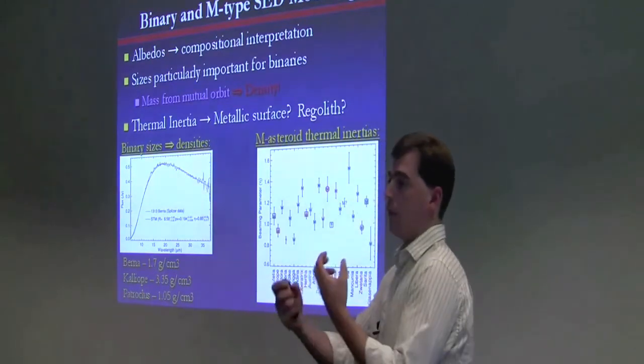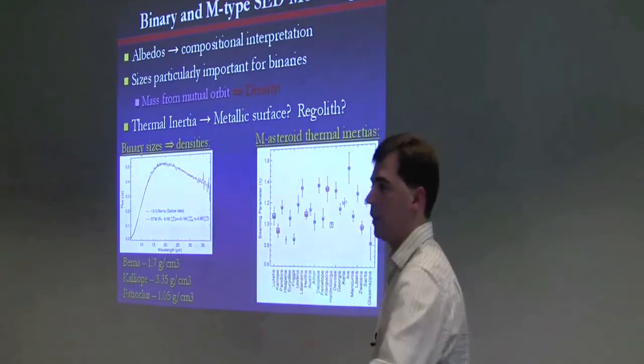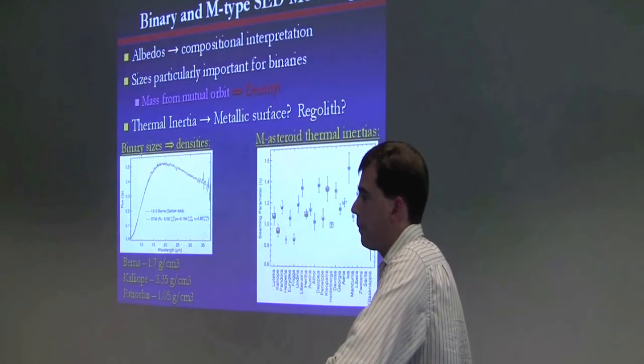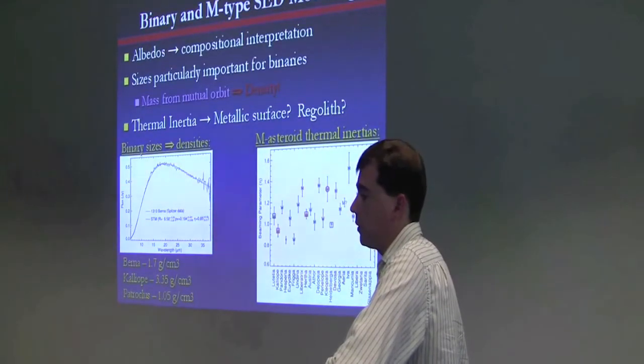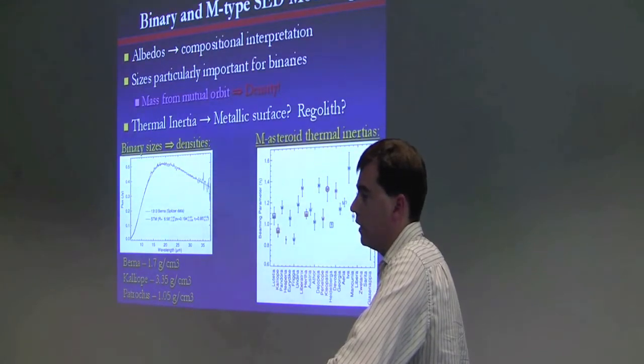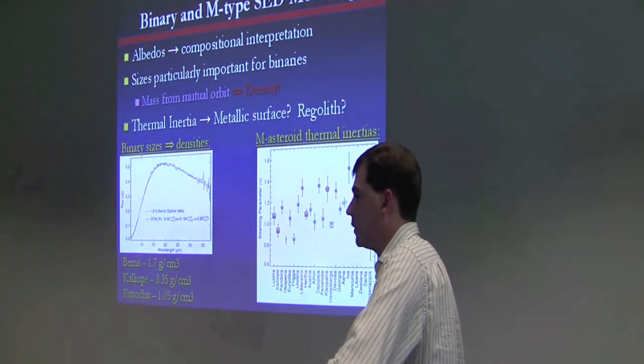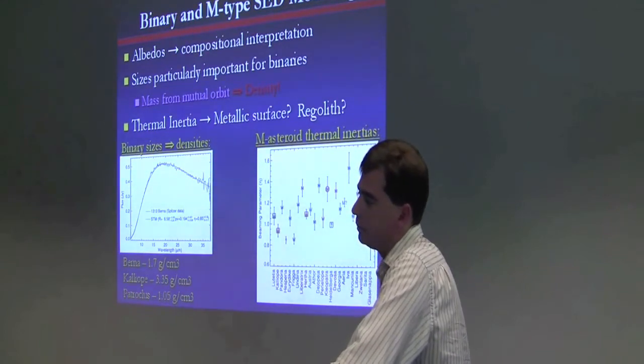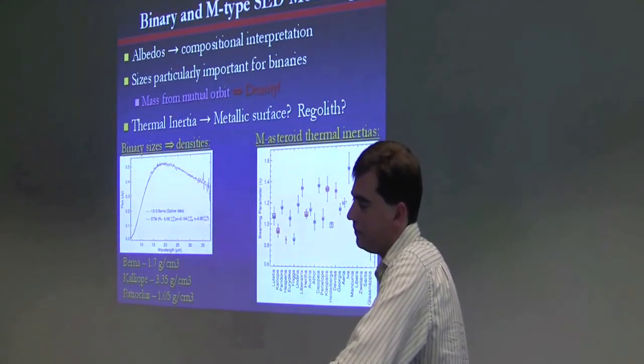Yes, actually we observed Patroclus eclipsing itself with one object eclipsing the other, with one component eclipsing the other. And so we were able to derive a thermal inertia from that, from the thermal response as the shadow passed over. Is Patroclus a Trojan? It is a Trojan. Patroclus is a Trojan. Even though he's a Greek. That's right, and he's in the wrong swarm too, actually.